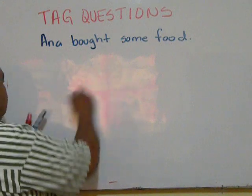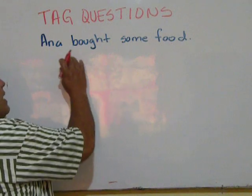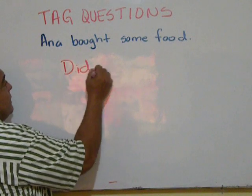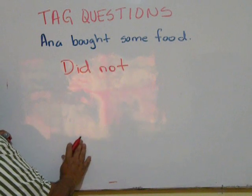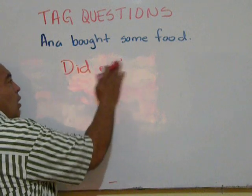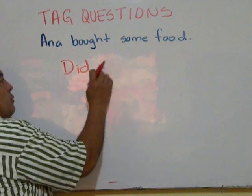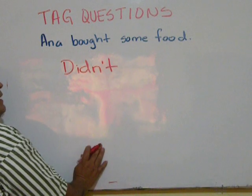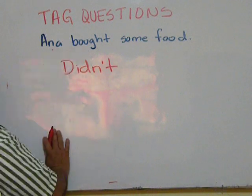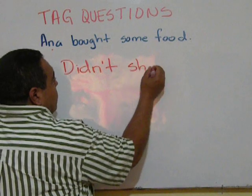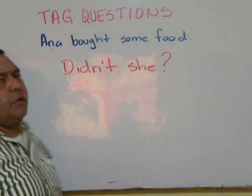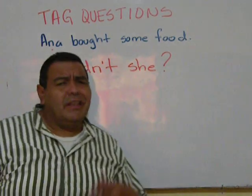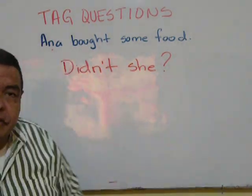Ana bought some food. Did she say it in an affirmative way? Did not. But remember, we always put this in a contraction: didn't. And the pronoun: she. Ana bought some food. Didn't she? That's the way you say it. Ana bought some food. Didn't she? That's the way it goes with the tag question.